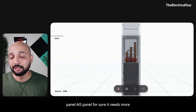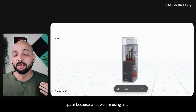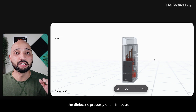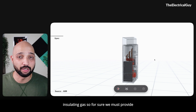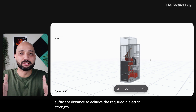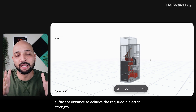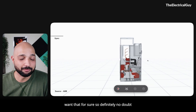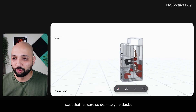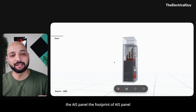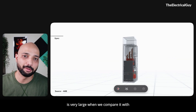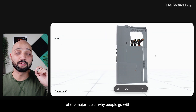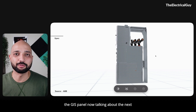AIS panels need more space because the insulating medium is air, and the dielectric property of air is not as good as SF6 or any other insulating gas. We must provide sufficient distance to achieve the required dielectric strength. So the footprint of an AIS panel is very large compared to an equivalent GIS panel — this is one of the major factors why people go with GIS panels.